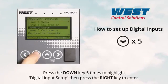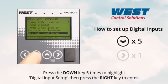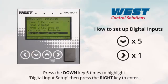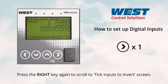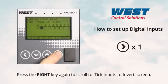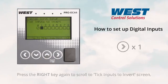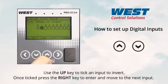Press the down key five times to highlight digital input setup, then press the right key to enter. Press the right key again to scroll to the tick inputs to invert screen.